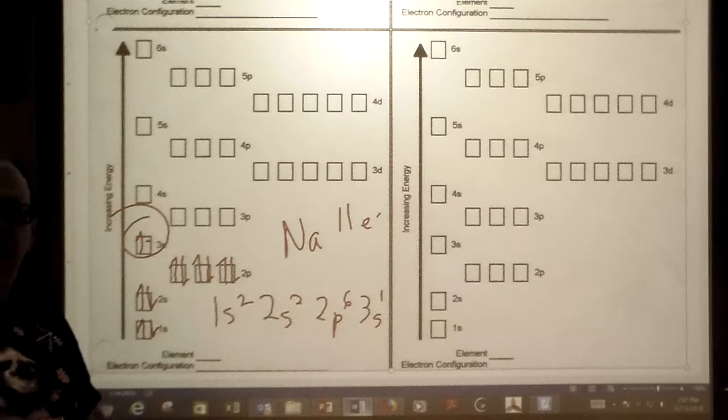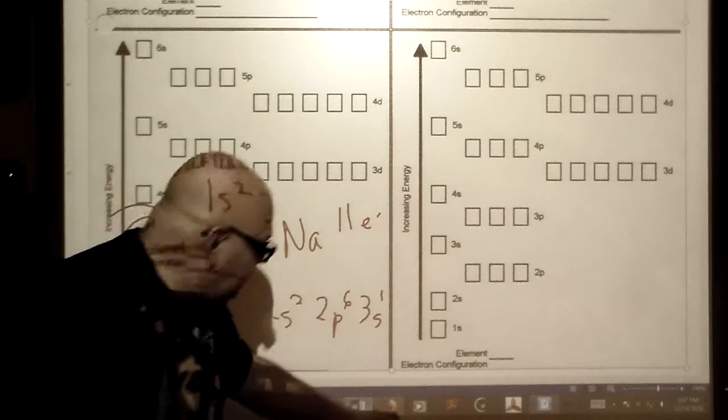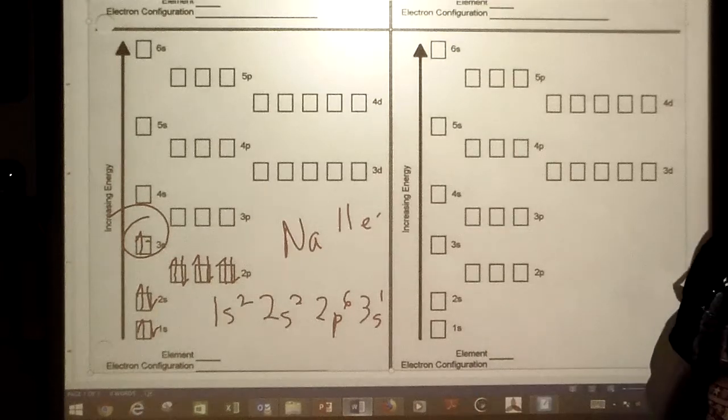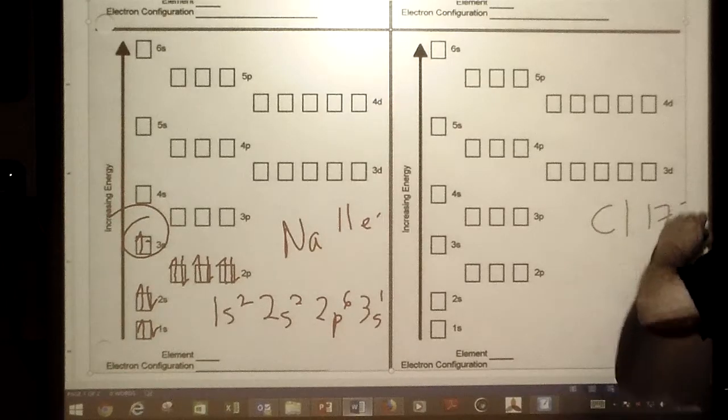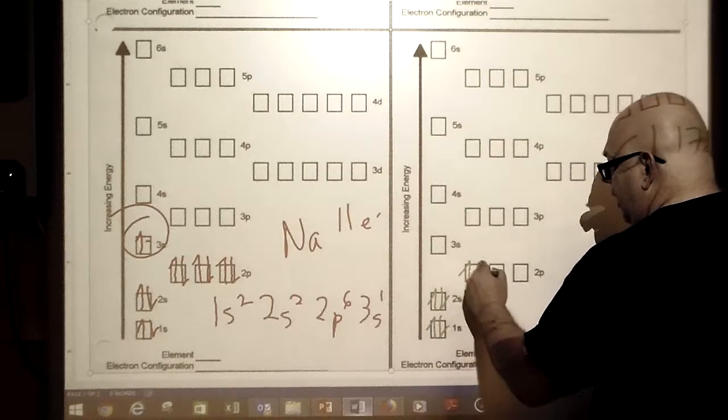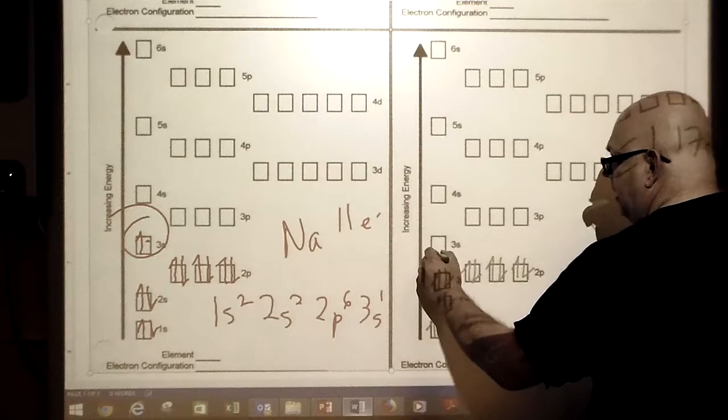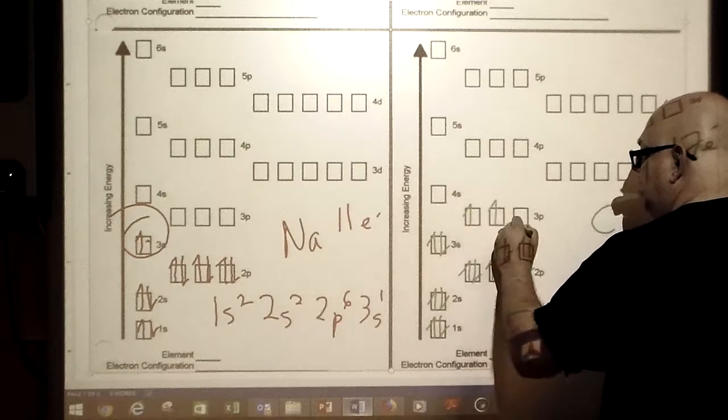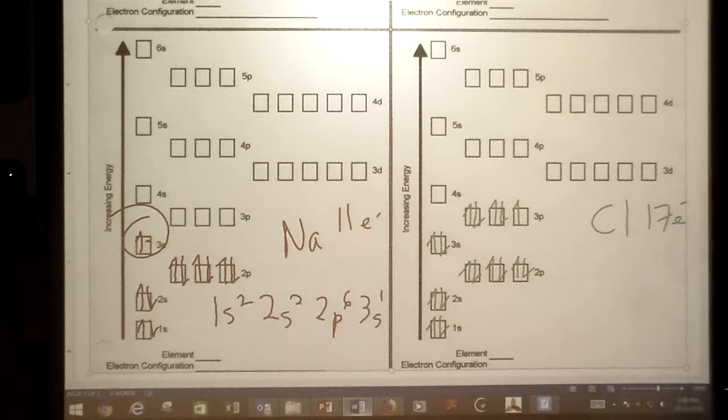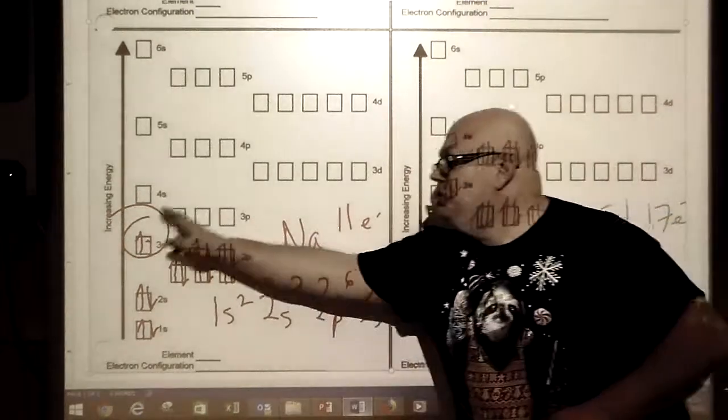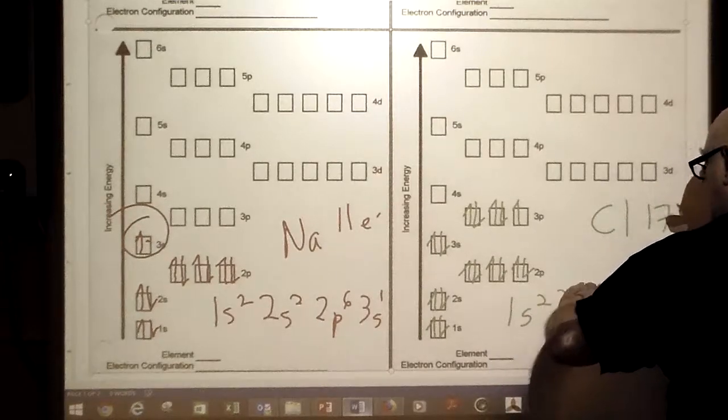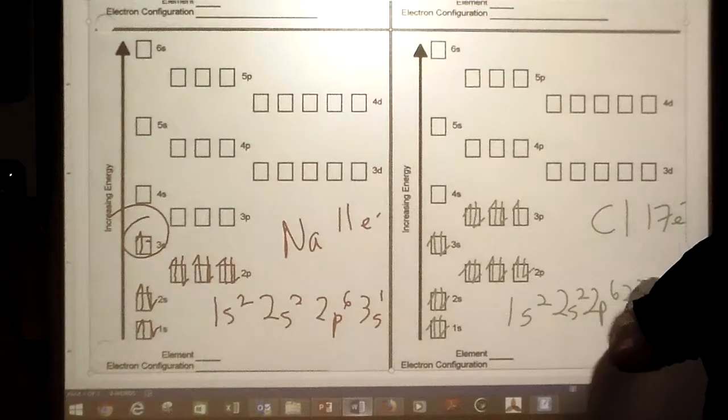Let's look at chlorine. Chlorine has 17 electrons, definitely a bigger molecule compared to sodium. We'll do 1, 2, 3, 4, 5, 6, 7, 8, 9, 10, 11, 12, 13, 14, 15, 16, 17. Notice how I have my arrows going up and down because the electrons are spinning opposite of each other. The notation for chlorine is 1s² 2s² 2p⁶ 3s² and 3p⁵.